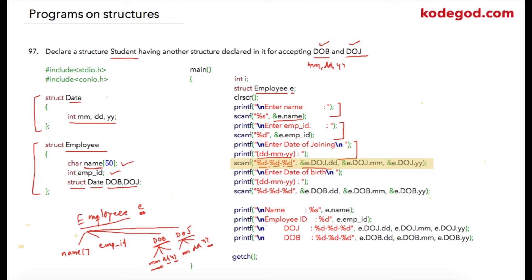All the values for these three integers which will be inputted by user will be stored at these locations: e.DOJ.dd, e.DOJ.mm, and e.DOJ.yy. User has to explicitly type dash between these values. If he wants to enter date as 26th of May 1983, then he will enter 26-05-1983. The use of dash is required because if user just enters the numbers together, then compiler won't know where each variable is ending.